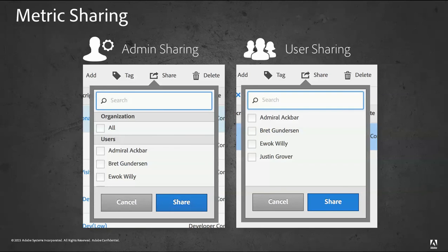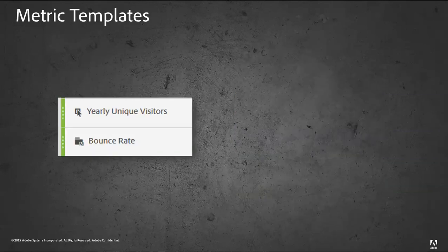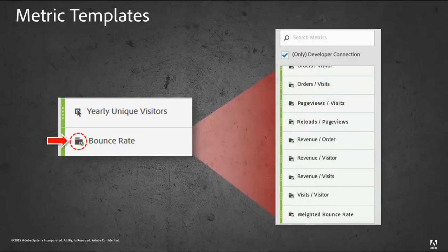In terms of metric sharing, it works very similar to segment sharing in the sense that only admin users can share with all of the organization. Users can only share with other individual users. I want to point out that you'll notice there's a slight icon difference there. That icon is for a metric template. When we introduced the segments, we had a segment template. We have some pre-built common metrics that we've seen that a lot of customers are using, and so we've pre-built some metric templates that you can leverage.